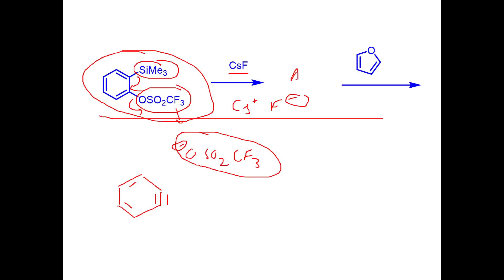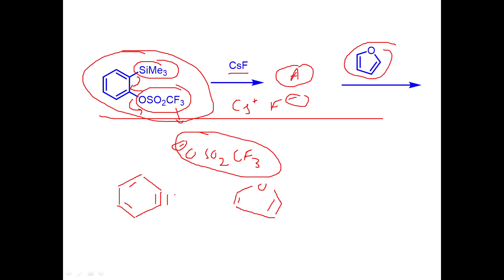Benzyne is compound A. The next step is adding a heterocycle, and this gives a Diels-Alder reaction. The benzyne is very reactive. The heterocycle's double bond approaches the benzyne carbon in a concerted mechanism, and then the other double bond attacks back.